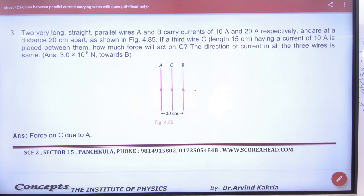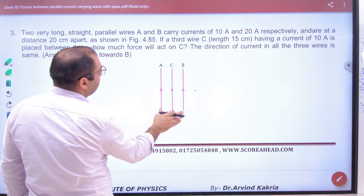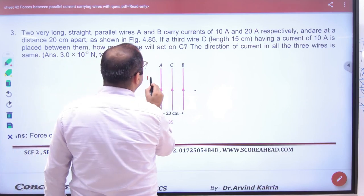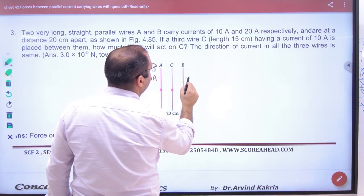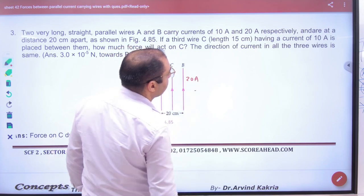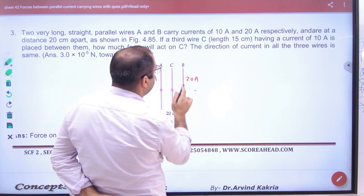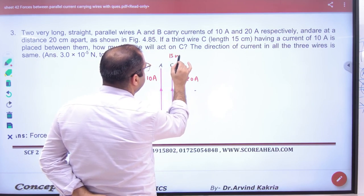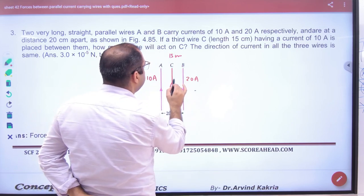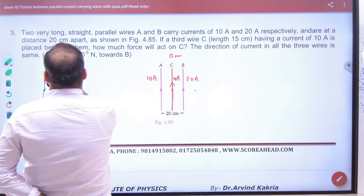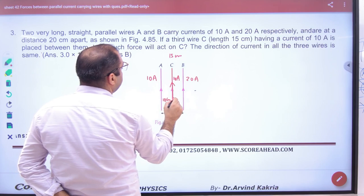In three parallel wires, total distance is 10 and 10 centimeters. Wire A is carrying 10 ampere current and wire B carrying a current of 20 ampere at a distance of 20. Third wire C, the length is 15 centimeter given. Current is 10 ampere given. So placed between them means this distance is 10 centimeter and 10 centimeter given.